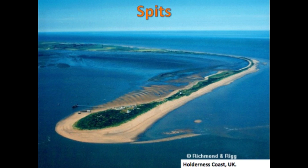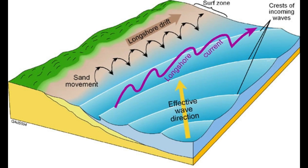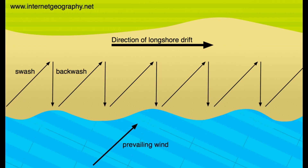Good morning. Today I'm going to talk about coastal spit formation. Spit formation is formed by longshore drift. Longshore drift happens when the waves crash onto the shore at an angle, moving the sediment with them.